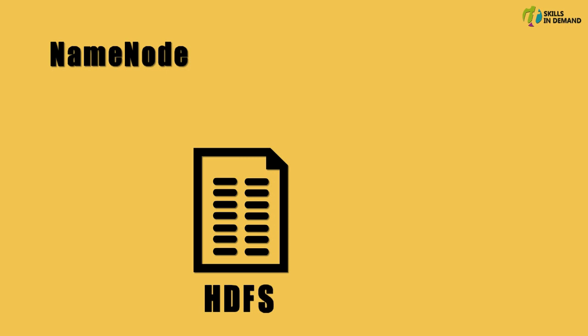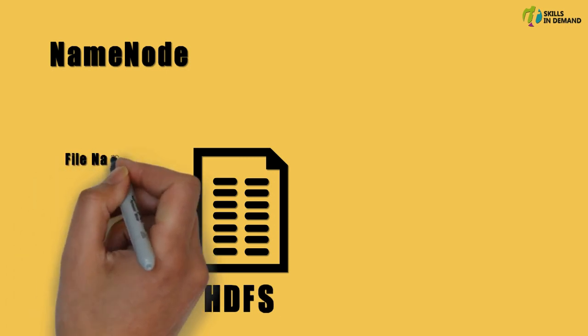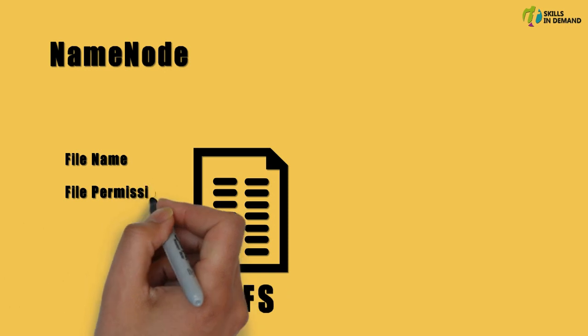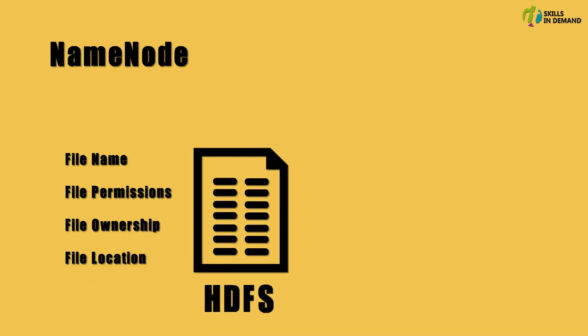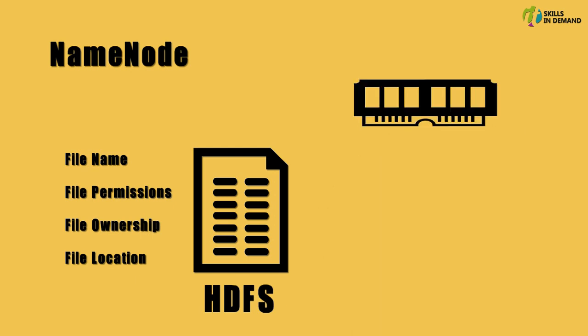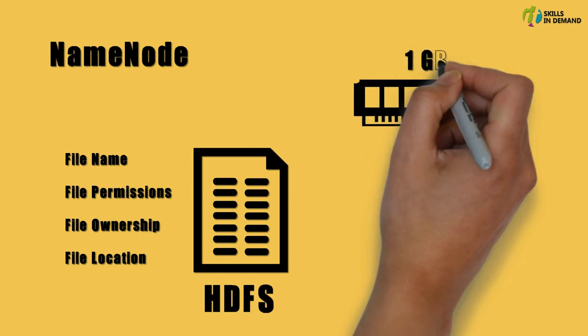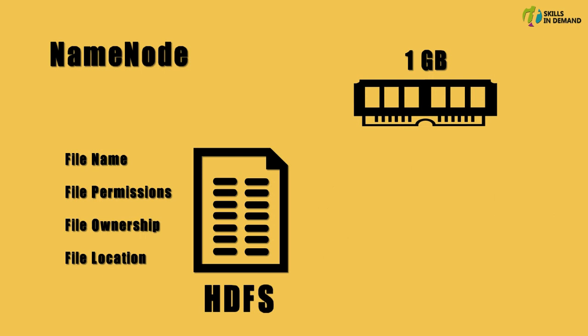It stores information related to the files, such as the file name, what permissions the file has, to which user a file belongs to, and where the file is located. It also stores information about what blocks of the file system are mapped to each file present within the HDFS. All this information is stored on the RAM, and it usually occupies around 1GB of RAM to keep track of approximately 1 million files. The information stored on the RAM is commonly referred to as file system metadata.